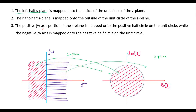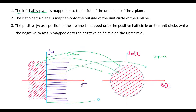The positive j omega axis portion in the z-plane is mapped onto the positive half circle on the unit circle. It means that the positive j omega axis is mapped onto the unit circle. Similarly, the negative j omega axis is mapped onto the unit circle on the negative half.